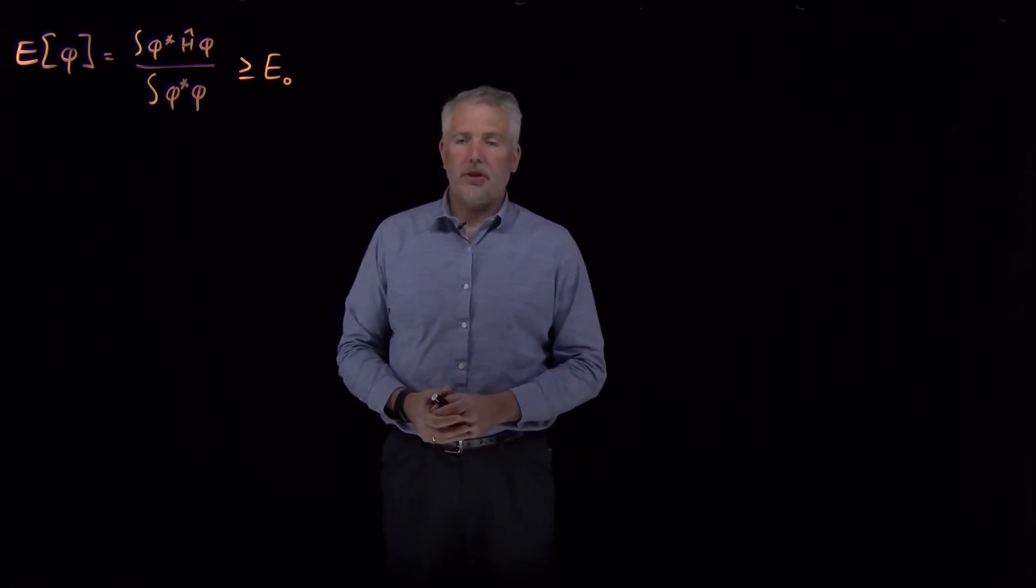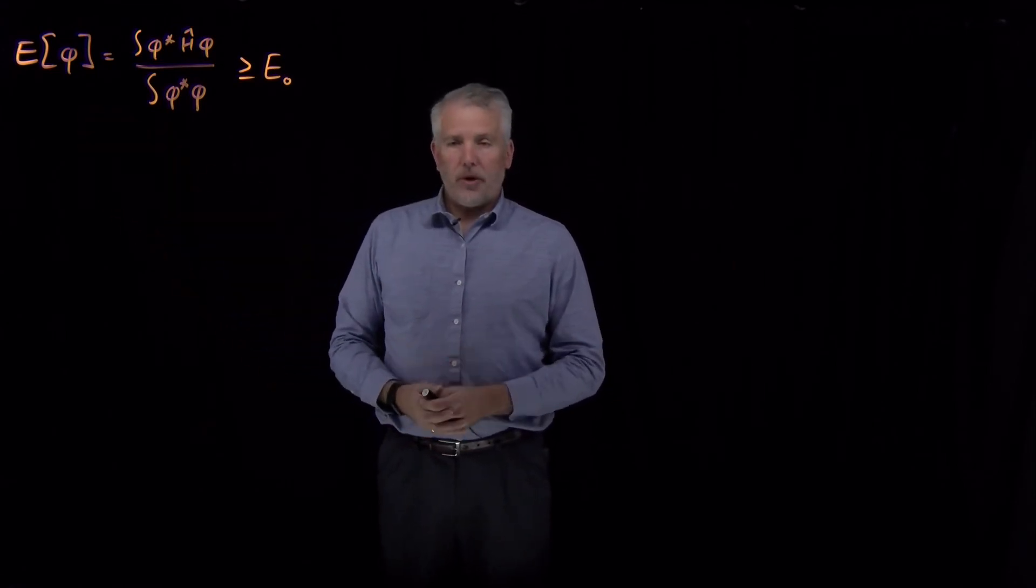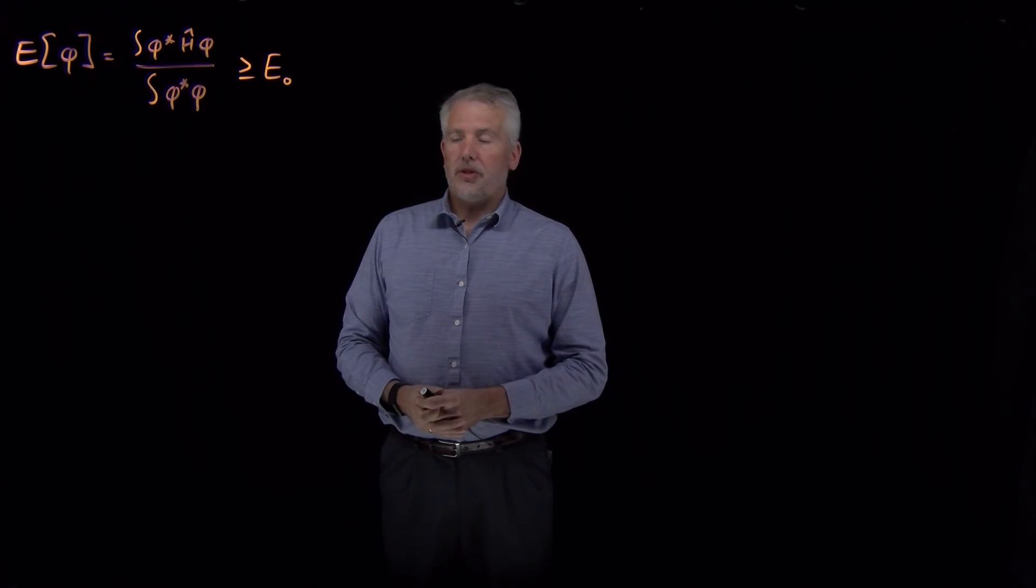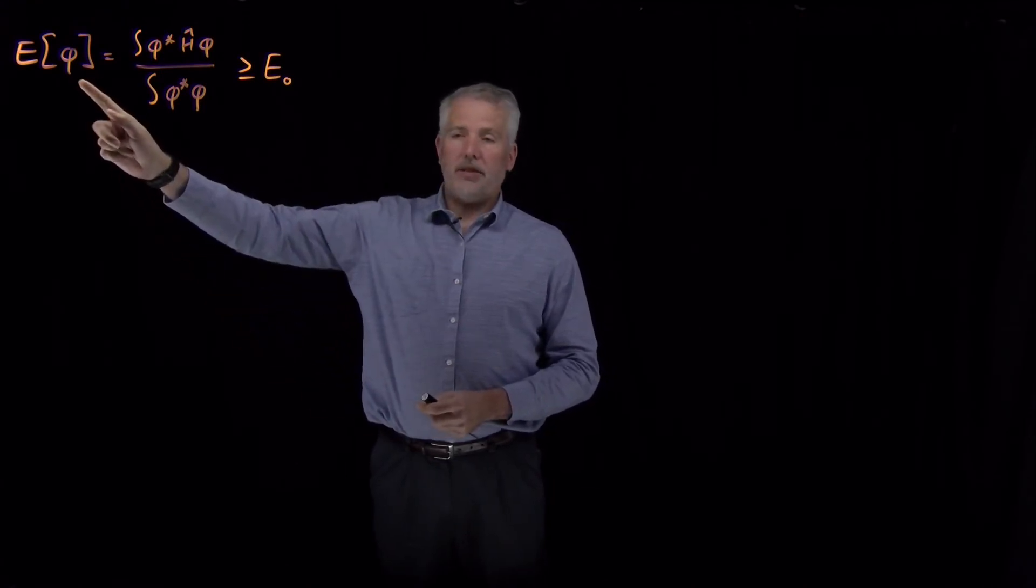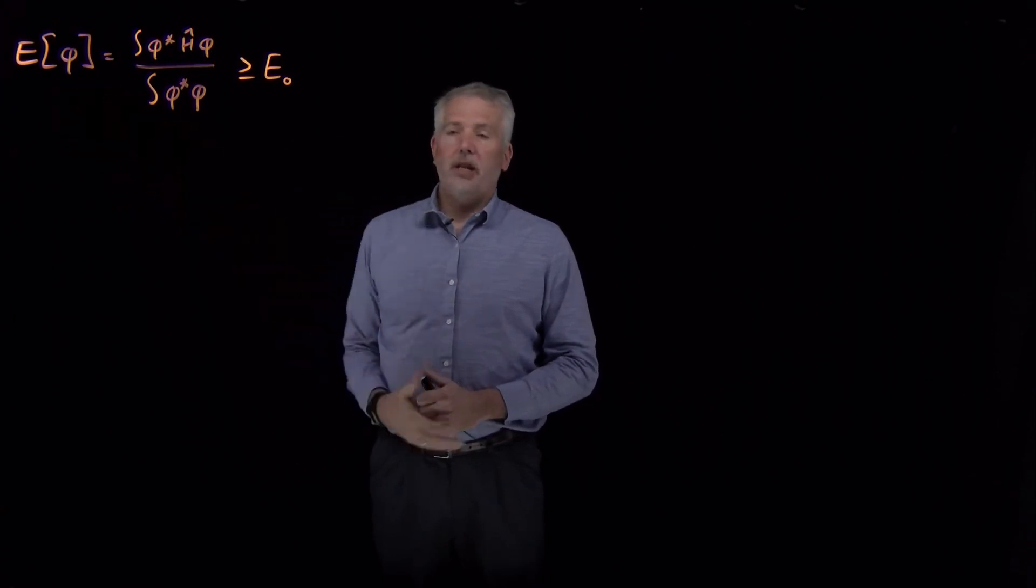By the end of this lecture, we'll understand what that means. What we've seen is that regardless of whether we know the right solution to Schrodinger's equation or not, if we have a guess at the solution, we can calculate the variational energy for that trial solution.